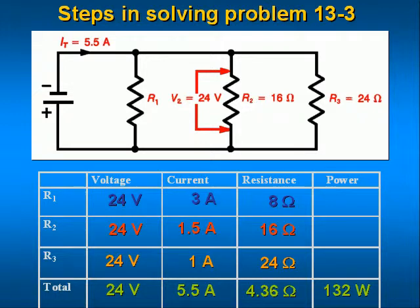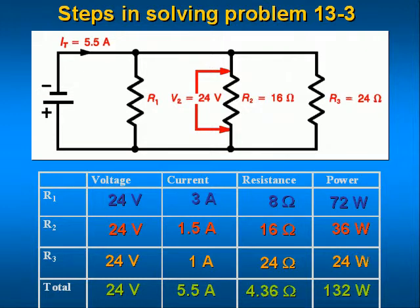The power dissipated by R1 is 24 volts times 3 amps equals 72 watts. The power dissipated by R2 is 24 volts times 1.5 amps equals 36 watts. The power dissipated by R3 is 24 volts times 1 amp equals 24 watts. Does the power dissipated equal the power supplied? 72 plus 36 plus 24 watts equals 132 watts — yes. The power dissipated in R1, R2, and R3 equals the power supplied to the circuit by the power source.